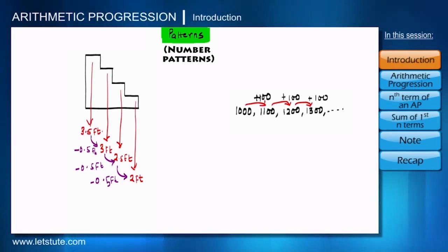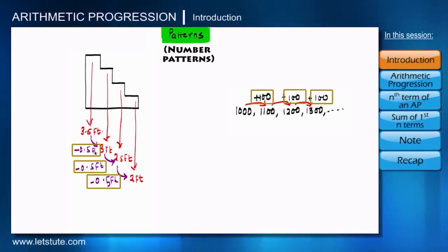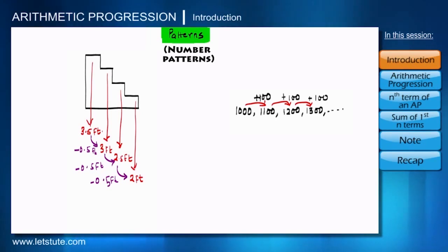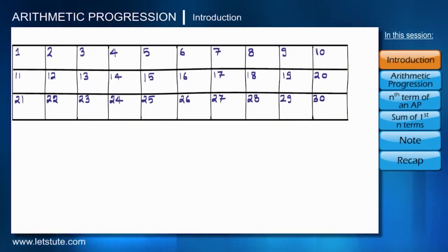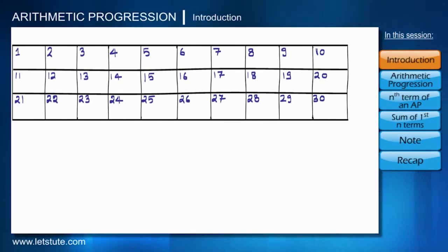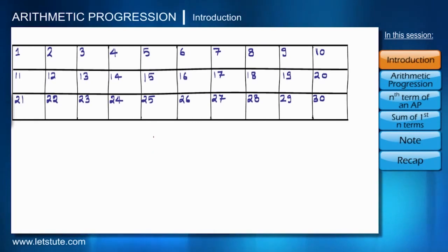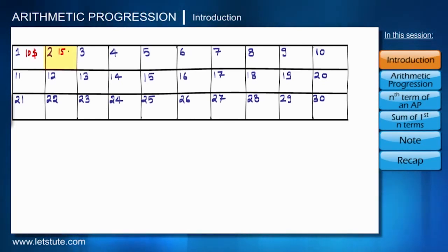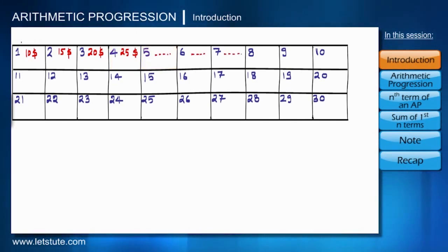In this session we are going to discuss about patterns where the succeeding number is formed by adding a constant number to the previous number. Here is a fresh example: I have got a new project by a company and I have to complete it within 30 days. The pattern in this example is the mode of payment — on the first day I would get $10, on the second day $15, on the third day $20, on the fourth day $25, and so on.